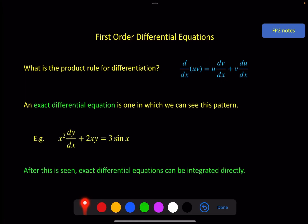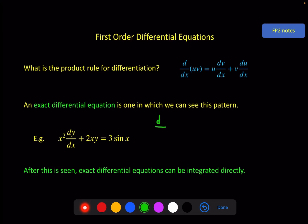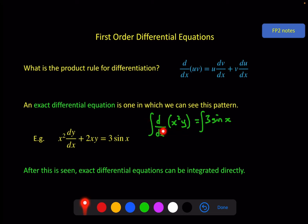For example, this one here that we had on the previous screen. Here we've got x squared — the derivative of x squared is 2x. Here we've got y, and the derivative of y with respect to x is dy by dx. Don't worry about the right-hand side for now. This part here follows this pattern. That means that the functions u and v — x squared and y — will be a product when we integrate this. So this will integrate to give x squared y. The derivative with respect to x of x squared y is the same as the left-hand side, and that must equal 3 sine x.